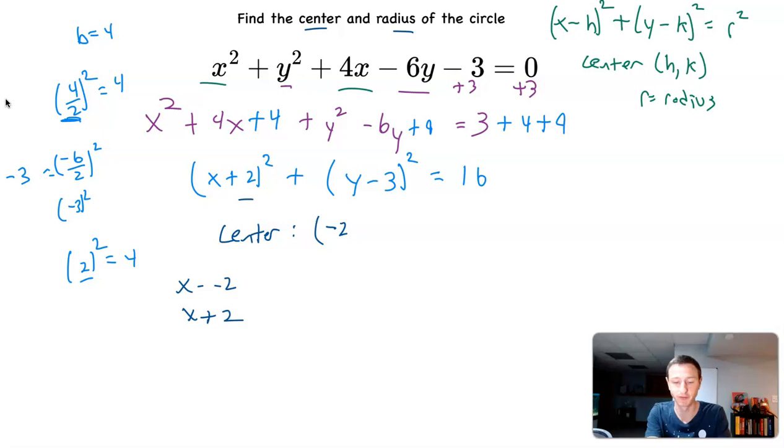So that center point is going to be negative 2. And then here, y minus 3, that's y minus k. So it's just minus the k value. The k value is 3. Boom. There it is. There's the center.